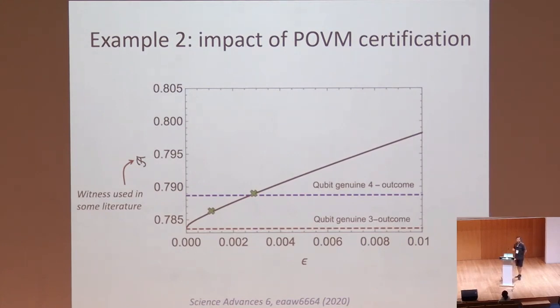Another example for a different task is the task of certifying that the measurement does what it's supposed to do. Here we want to certify a qubit measurement, which has four outcomes. So it's an extremal POVM measurement. Here on this axis, you have a correlation witness, suitably designed to witness the measurement that we happen to be interested in. Here on this axis, you have the deviation.